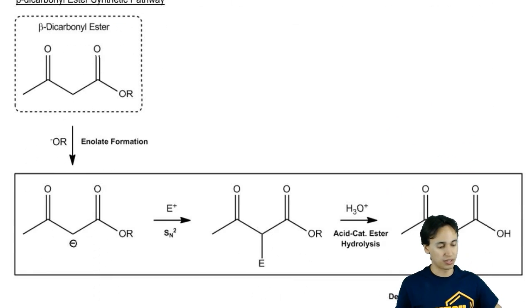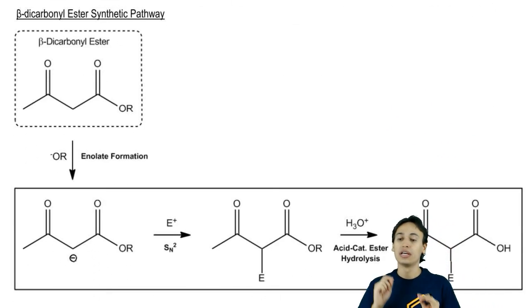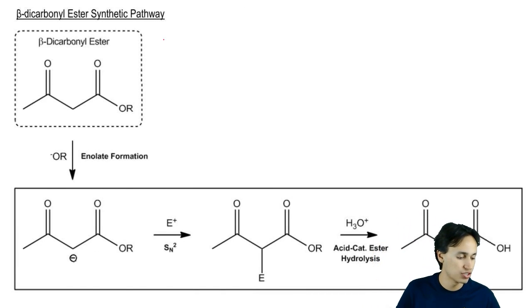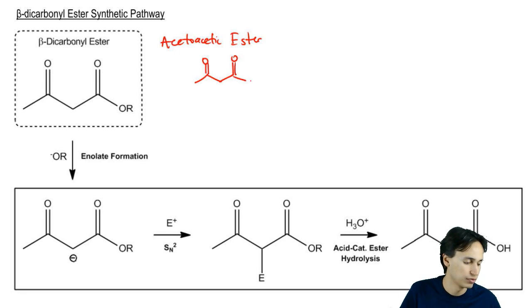This is what the pathway looks like. You start off with a beta-dicarbonyl ester. There's two of these that we're going to be learning about. There's acetoacetic ester. Acetoacetic ester looks like this. It's basically the one that you have drawn here, the one that's already drawn in that box.